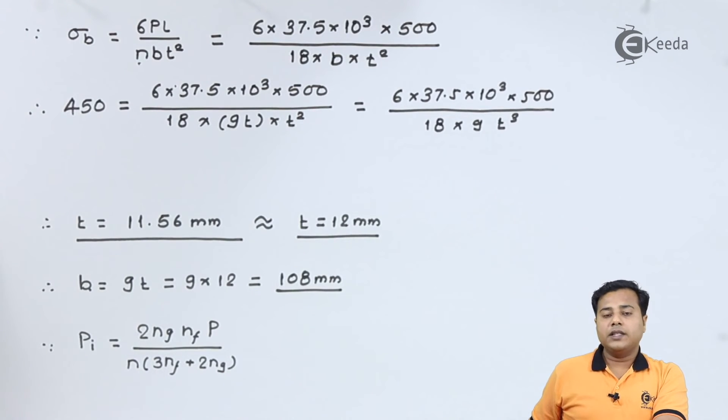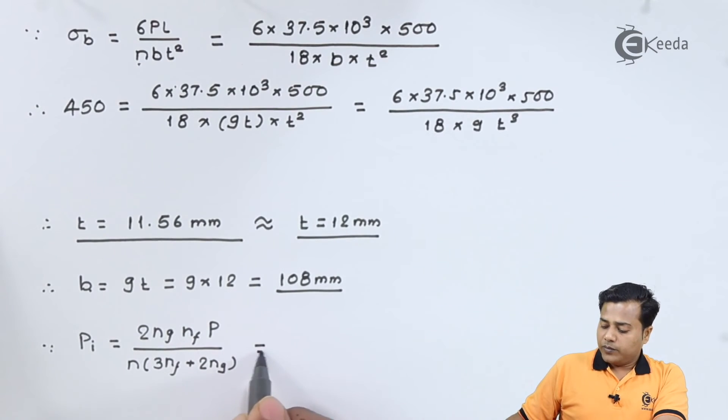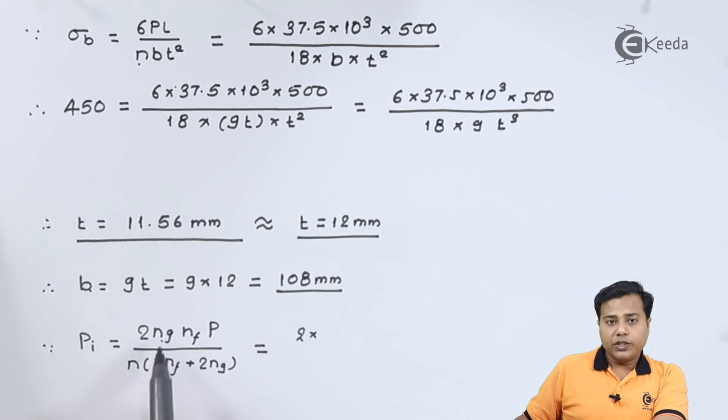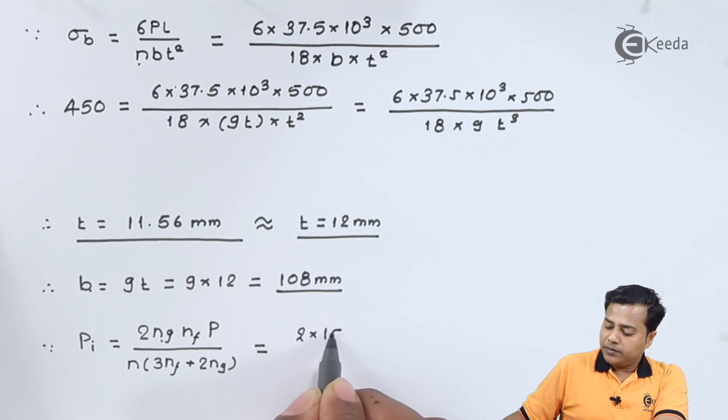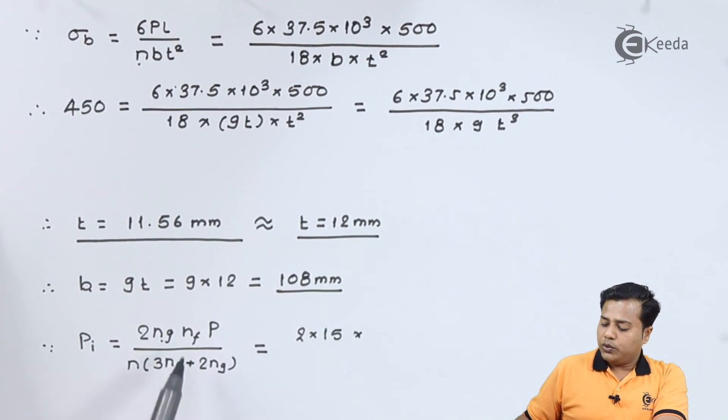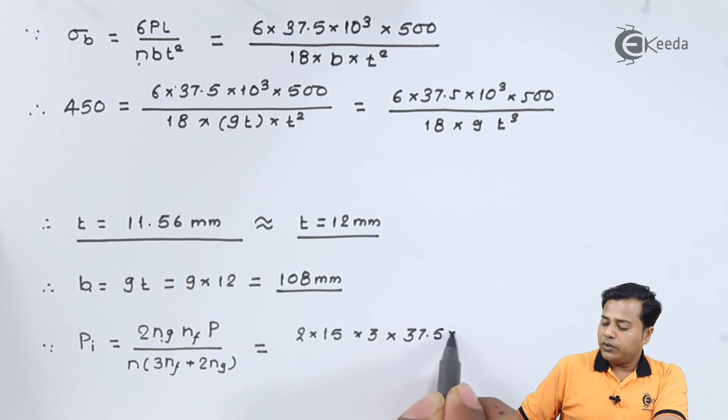The last thing is the initial force that is required to raise the nipping to 0, that is the equilibrium of the leaf spring. Let us substitute the values: 2 × n_g × n_f × P divided by n (3n_f + 2n_g). That is 2 times the graduated level which is 15 into full length into the force acting on one part 37.5 × 10³.